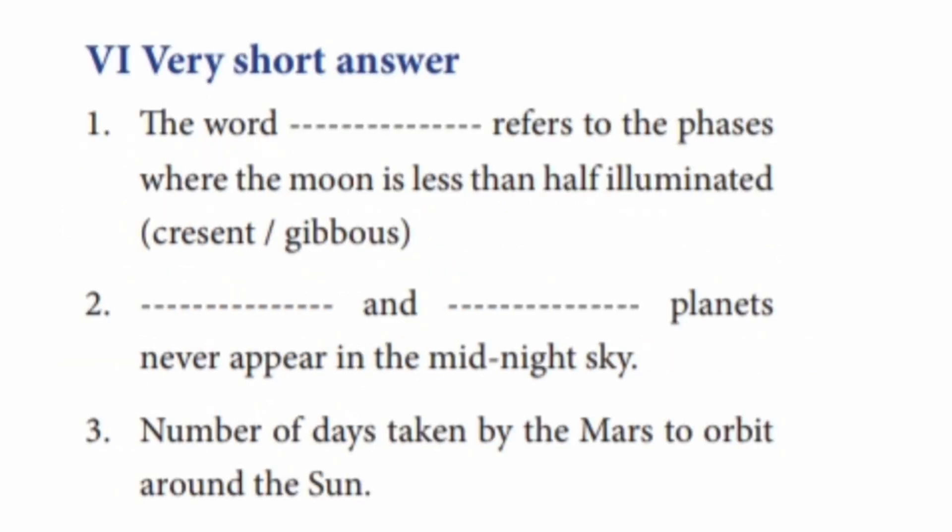Section 6: Very Short Answers. Question 1: The word 'Crescent' refers to the phases where the Moon is less than half illuminated.